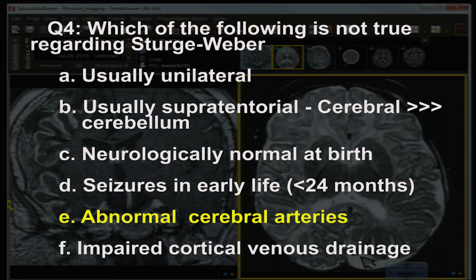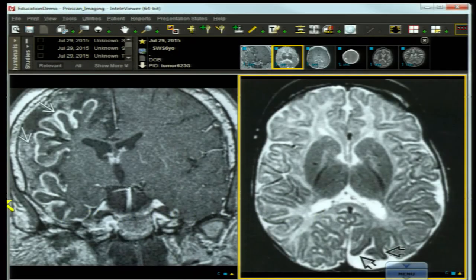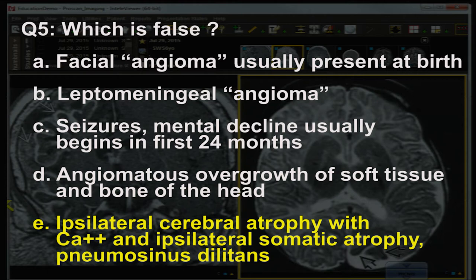Question four: the answer is E — abnormal cerebral arteries. Sturge-Weber is a peripheral leptomeningeal venous telangiectasia — a venous abnormality, not an arterial one. The true features include impaired cortical venous drainage, seizures in early life before 24 months, neurologically normal at birth, most often supratentorial with cerebrum greater than cerebellum, and usually unilateral — though bilateral cases exist.